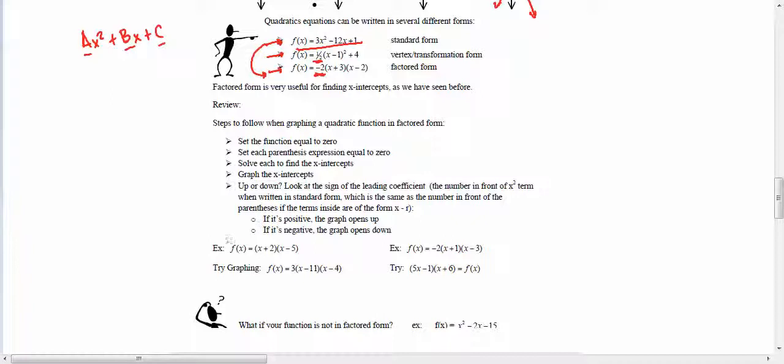Later on we're going to even show you how to write it in vertex form. So you're taking the same parabola and writing it in three different ways. Each of these different ways has their usefulness. Steps to follow when graphing a quadratic in factored form. Actually we just did this. I'm not going to cover this.